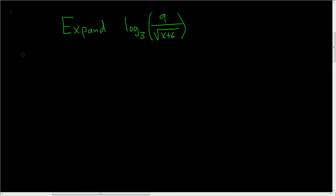So we're being asked to expand this solution. We'll start by using the quotient rule because we actually have a fraction here. So this will be the log base 3 of 9 minus log base 3 of the square root of x plus 6. So that was the quotient rule, right, because we had a fraction and that gives us a minus sign.